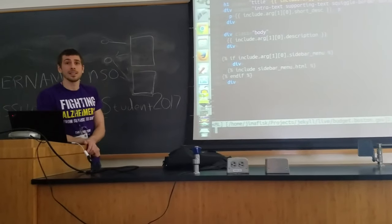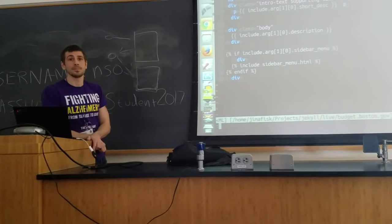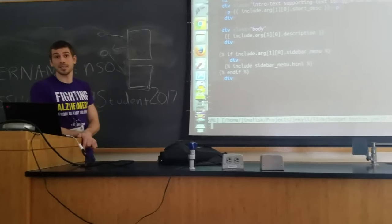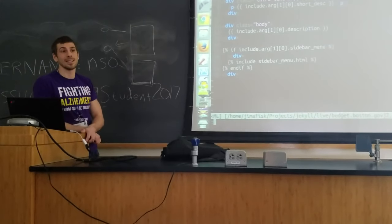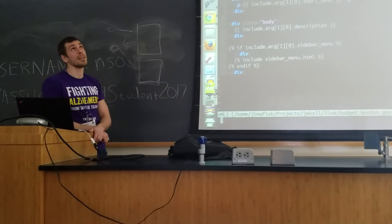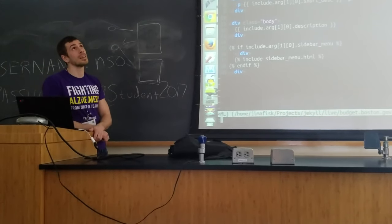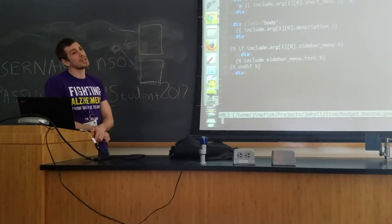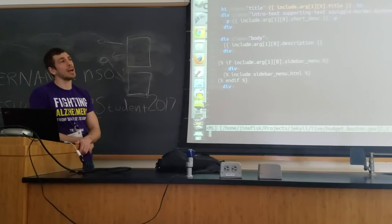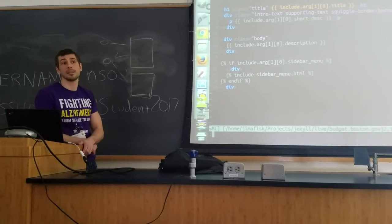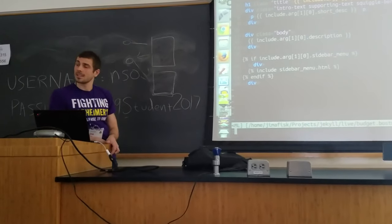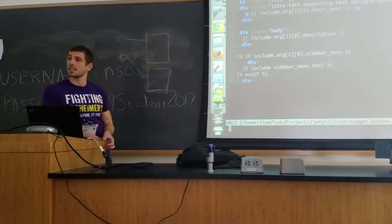Question from audience: could you solve the problem of unique keys by using a list or an array? I'm sure you could — that's actually a good way around it. What used to be the key becomes a new property in the array. Yeah, that's a good way around it. The source for all this is available publicly in the repository.